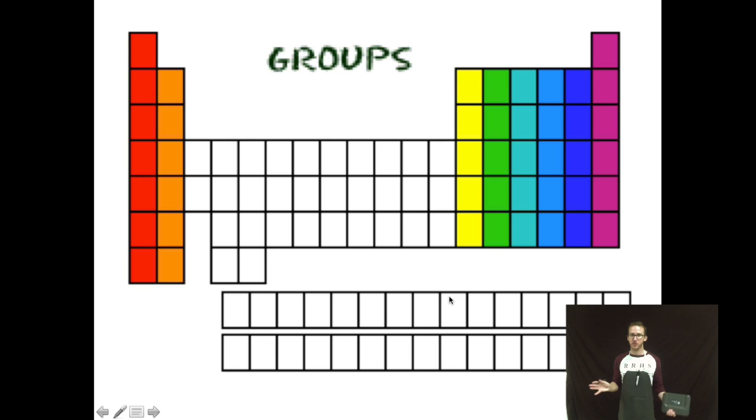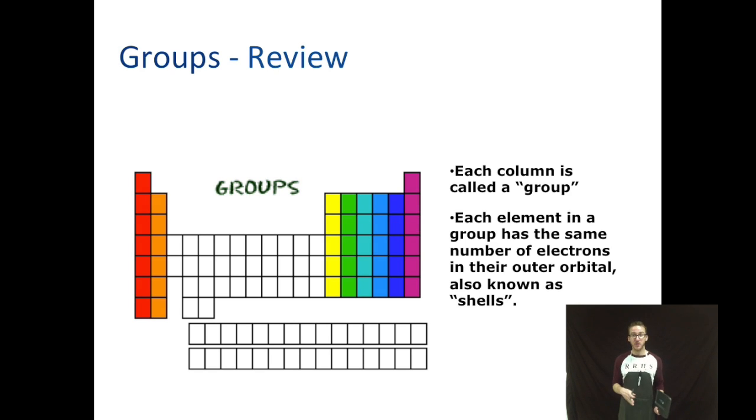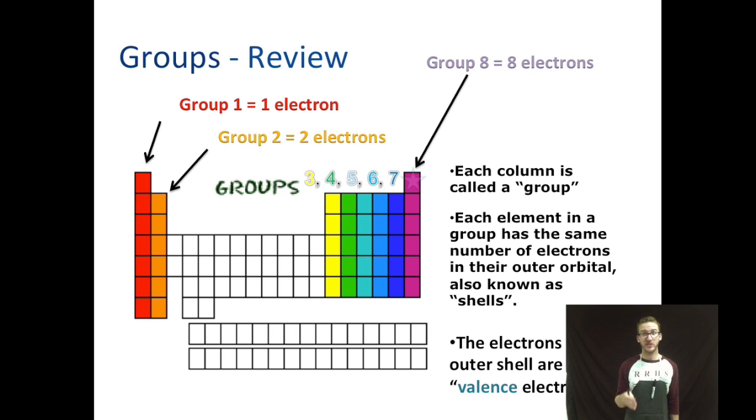Beautiful periodic table. Your groups are highlighted here in a wonderful rainbow of colors. Recall some important things about your groups. Each column is called a group. Each element in a group has the same number of electrons in their outer or valence level, also known as shells. The electrons in the outer shell are called valence electrons. In group one, there's one valence electron. Group two, two valence electrons. And then as you look at your remaining groups there, they're just going to follow the group number to tell you the number of valence electrons. Of course, watch out for helium there. In group eight, it's an exception. It only has two electrons total, both in the valence level.